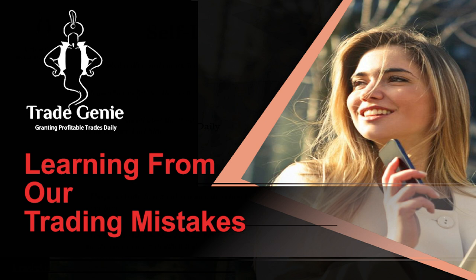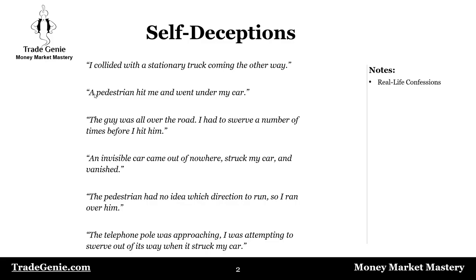We unconsciously behave in a different way as human beings. Some examples I read: self-deception — how people describe road accidents. 'I collided with a stationary truck coming the other way.' 'A pedestrian hit me and went under my car.' 'An invisible car came out of nowhere, struck my car and vanished.' 'The telephone pole was approaching; I was attempting to swerve out of its way when it struck my car.' You see how people are deceiving themselves — and we deceive ourselves the same way when we are trading.